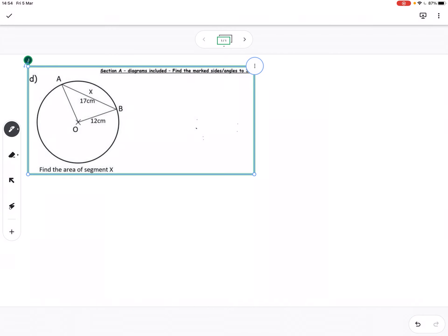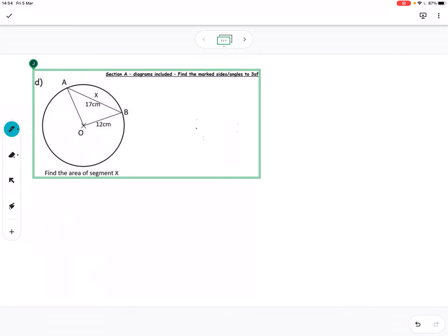Right, I'm going for it. I don't know what this is going to be. I'm not going to work it out yet. Let's see what it sounds like when I think out loud. So, find the marked side angles to three significant figures. Presumably that means this and the AB, this guy here. Find the area of segment X.